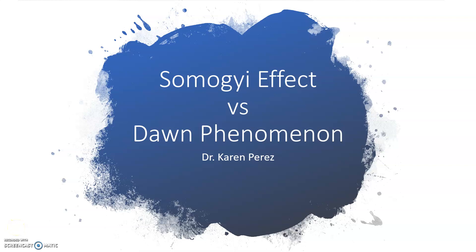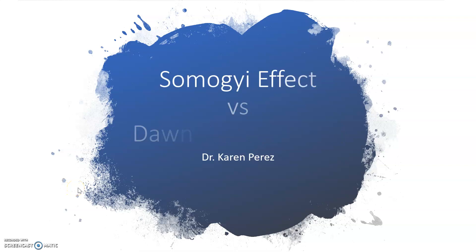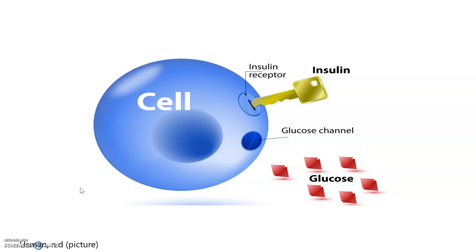This is Dr. Karen Perez with a video comparing the Somogyi effect with the Dawn phenomenon. There are videos out there that have spoken about them individually, but in this video I want to do a side-by-side comparison. Just to recap, there are two reasons why a person who has diabetes will have blood glucose that is increased in the morning: one is the Somogyi effect and the other is the Dawn phenomenon.